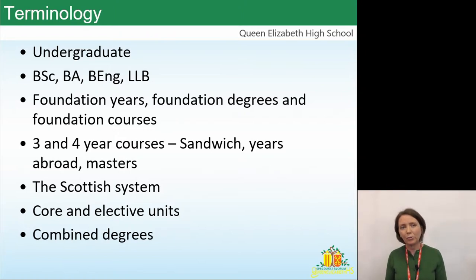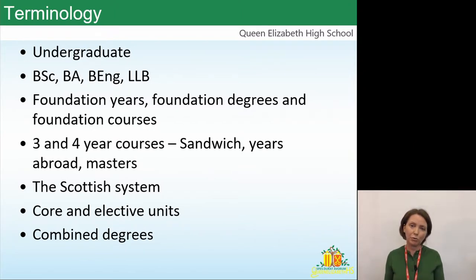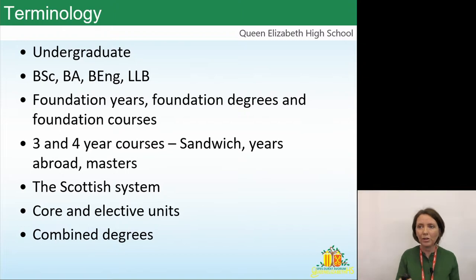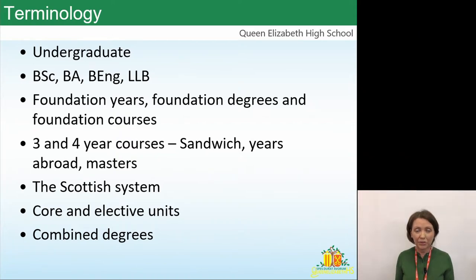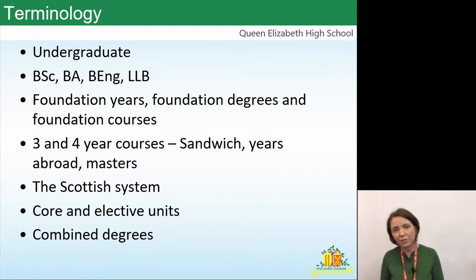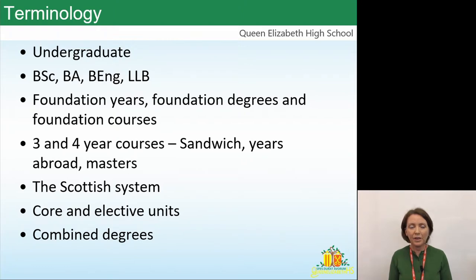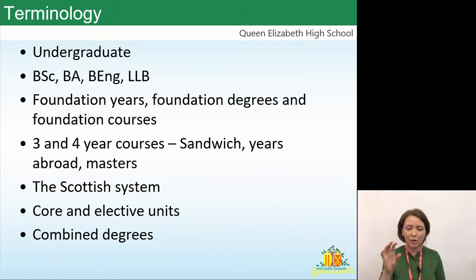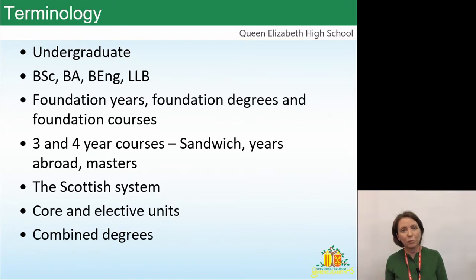Students may also encounter different degree lengths. Some degrees are three years, some are four years — usually four years if another element is built in, such as a year working in industry, known as a sandwich course, or a year studying abroad on a language degree. Students also come across master's degrees, which in England are degrees you do after your undergraduate degree — a higher level of qualification. They don't need to worry too much about that now.